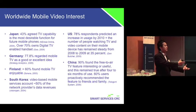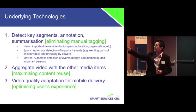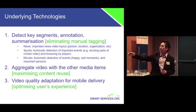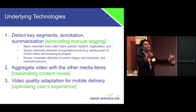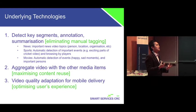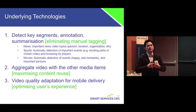Taking the existing contents, which are mainly web video for example — how do we do that? In our research, we deliver three underlying technologies. The first two are basically content preparation that eliminates manual tagging, and we also want to maximize content reuse. So how can we annotate and summarize all these contents? The third one, which is also very important, is how to adapt the video quality so that it's a very optimized version for mobile delivery.